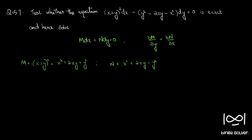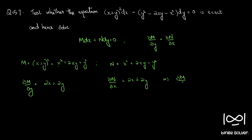Now checking the condition: ∂M/∂y — partially differentiating with respect to y, treating x as constant — gives 2x plus 2y. Similarly ∂N/∂x also gives 2x plus 2y. Since ∂M/∂y equals ∂N/∂x, therefore the differential equation is exact.